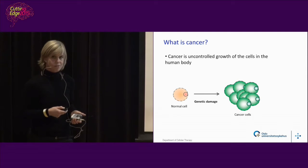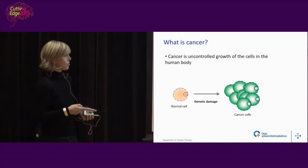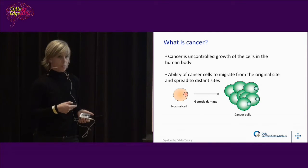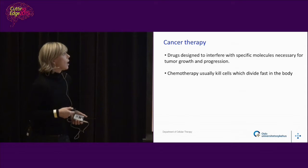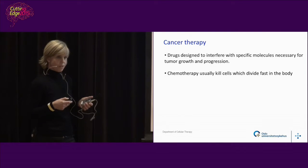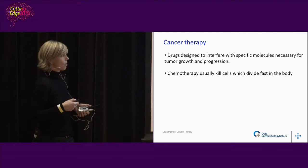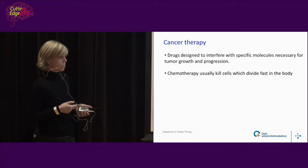So what is cancer? It's uncontrolled growth of cells in the body. You have a normal cell that gets genetic damage, and then you get cancer cells that keep dividing and become too many. They can also migrate or move to other sites in the body far away from where they originated. Cancer therapy is normally designed to interfere with molecules that tumor cells need to continue to grow and progress. Chemotherapy normally kills cancer cells that divide fast, but also other normal cells that divide fast — that's why you lose hair during chemotherapy.